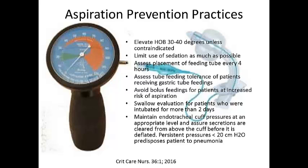What can we do to prevent aspiration? Standard interventions include keeping the patient's bed elevated between 30 to 45 degrees unless contraindicated, limiting the use of sedation as much as possible so the patient can swallow their own secretions, and assessing feeding tube placement every four hours to make sure it hasn't migrated. Nurses will often mark the entry point of the tube and check that length. For patients at increased risk of aspiration, avoid bolus feedings — they do better with a continuous drip, and possibly even feeding into the jejunum.